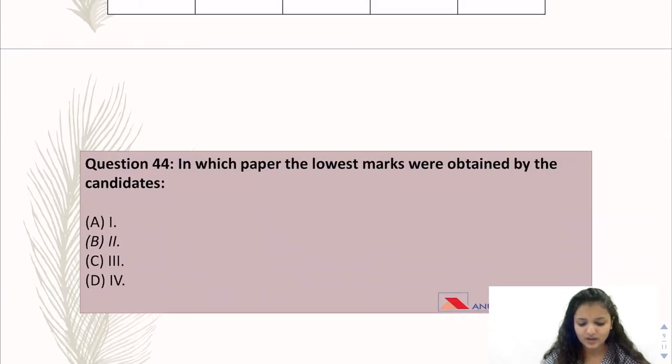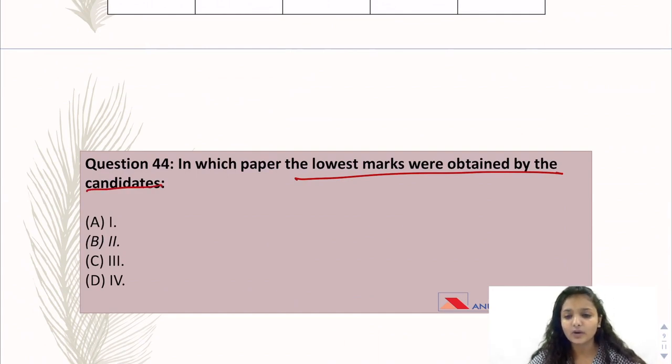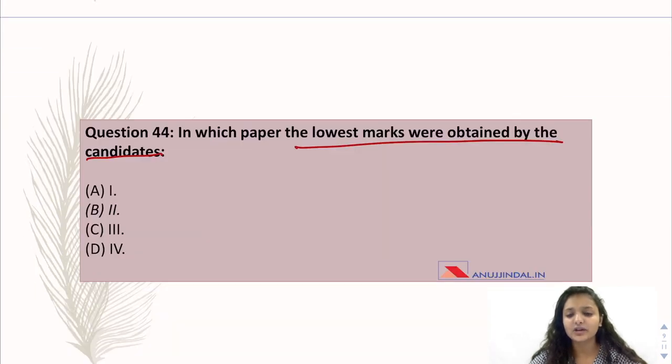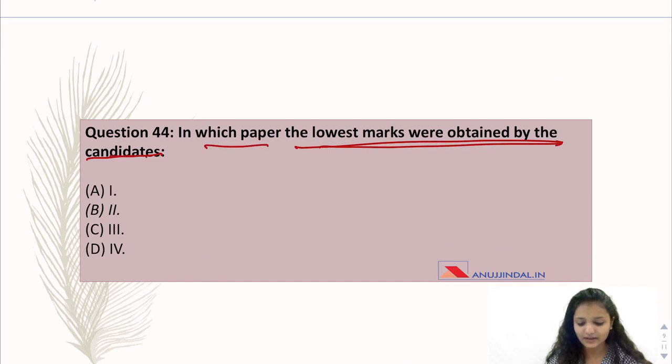Question number 44: In which paper the lowest marks were obtained by the candidates? Now in this question, please take a look at the lowest marks which were obtained by the candidates in which paper. So students generally misinterpret that we have to aggregate paper-wise here. But this is not the answer.